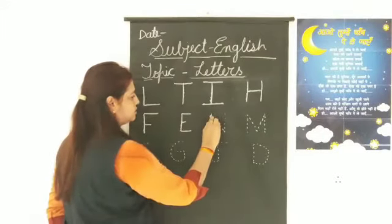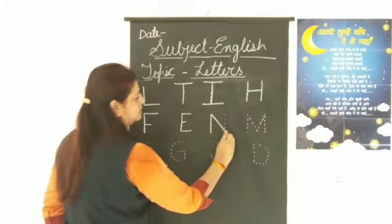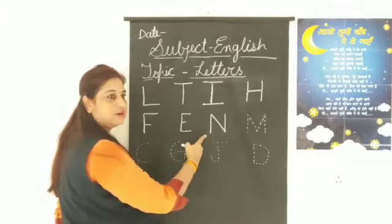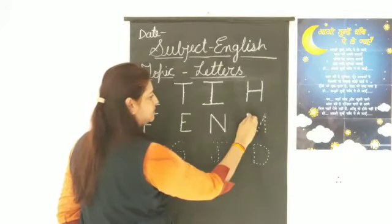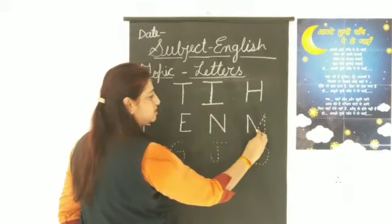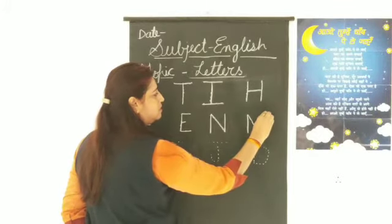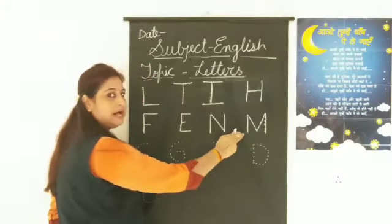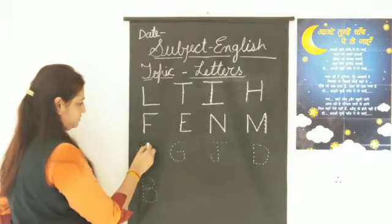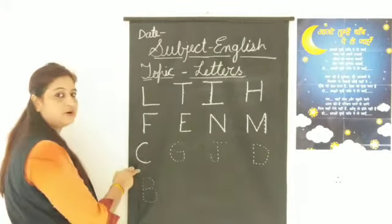M. Standing line, slanting line, standing line — down to upwards. This is M. M for mango. C. Make a curve. C for cat.